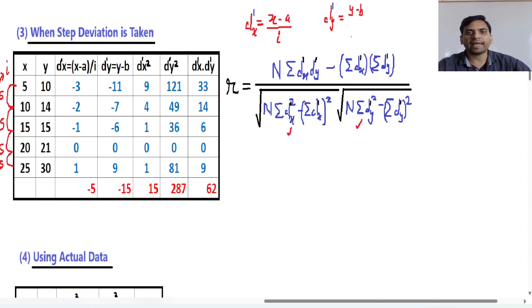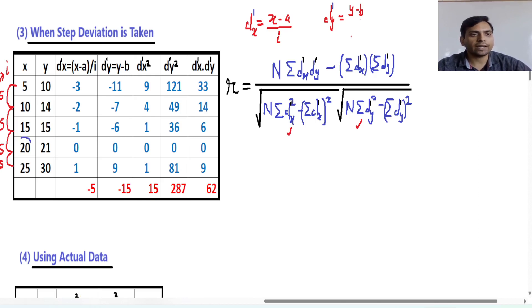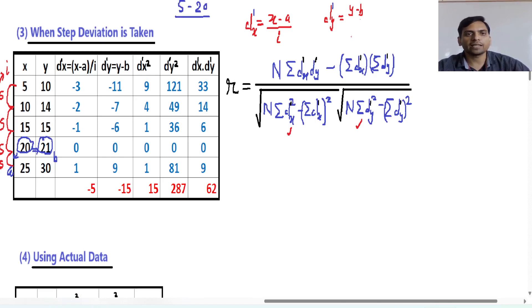First, calculation of dx-dash: the formula is x minus a, divided by i. We are taking a as 20, and the corresponding value of y is considered as b. Simply, x is 5, a is 20, and gap i is 5. So this becomes minus 3. In the same way, you can find all these values for all the different x values.